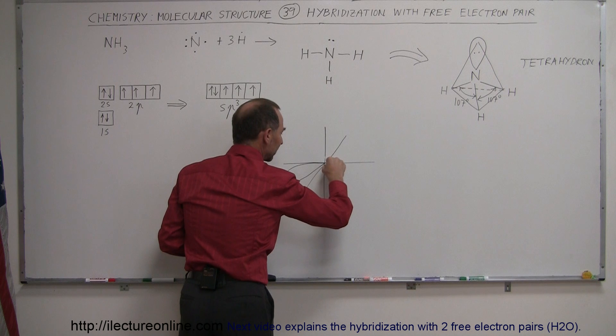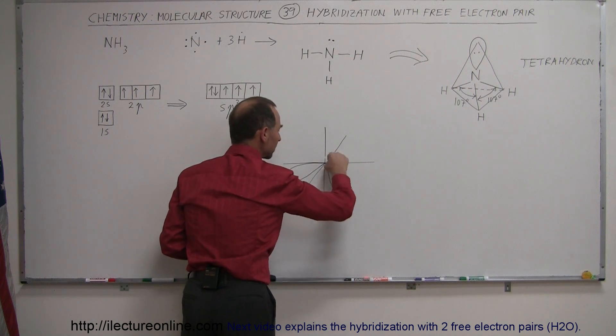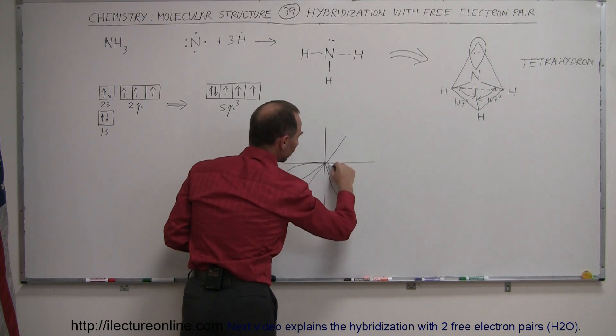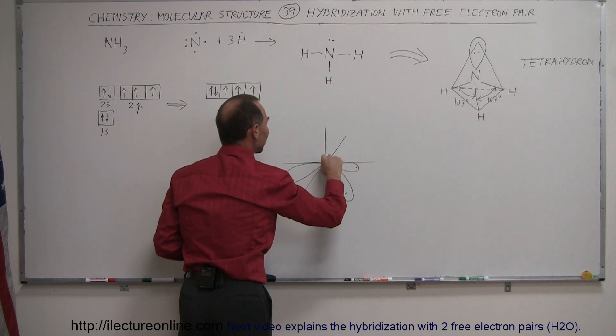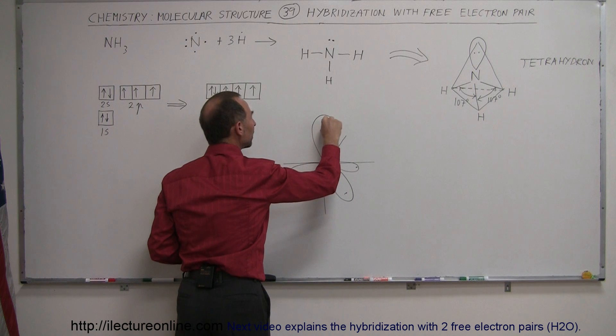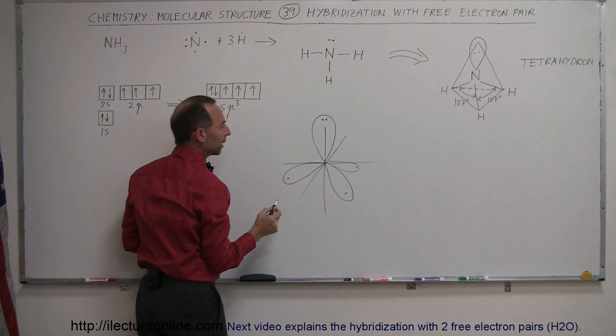Then we have another one sticking out here this way, and then we have a third one towards the back and sticking out this way, and then we have a fourth one coming up here which will contain two electrons and therefore will not bond with anything.